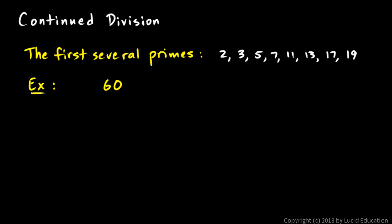Okay, now I'm going to show you another method for finding the prime factorization of a number, and this is sometimes referred to as continued division, and I'll show you this method with the number 60.